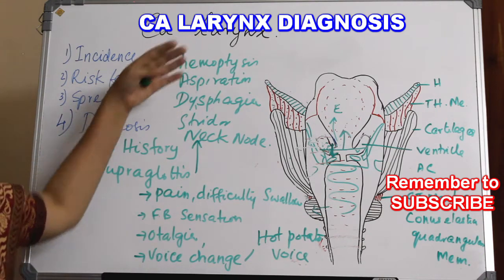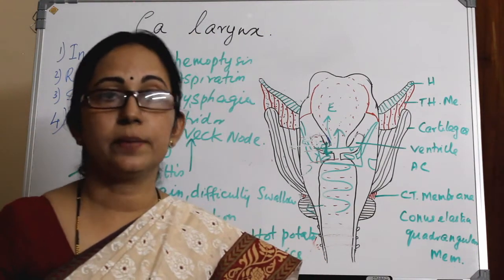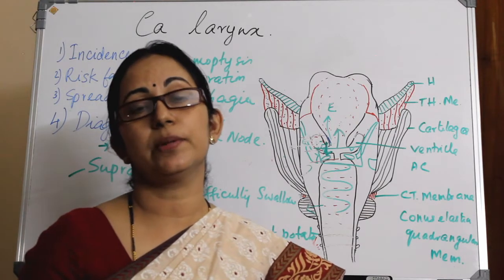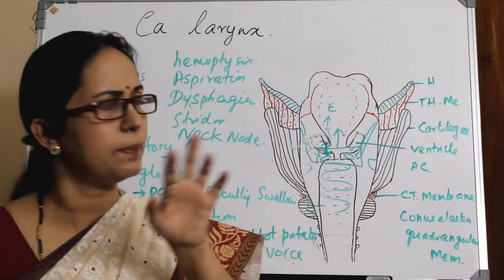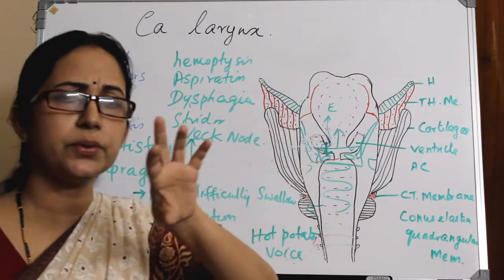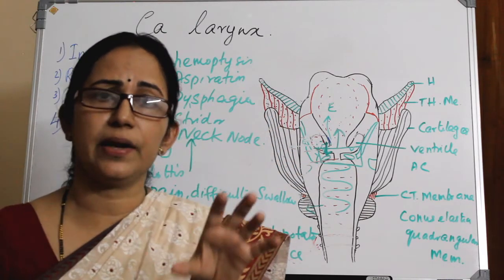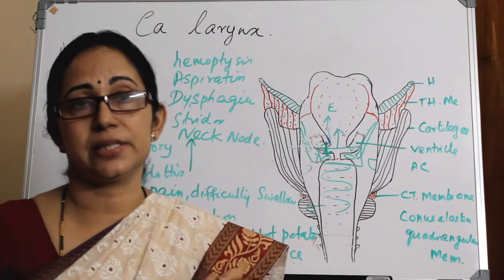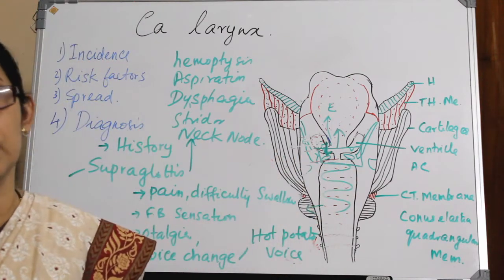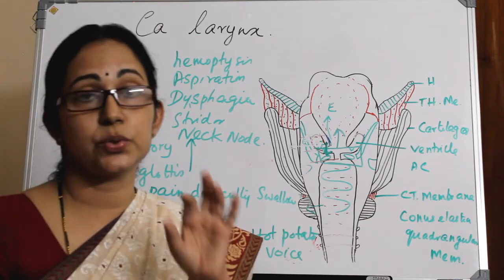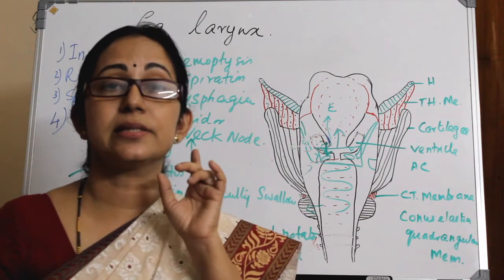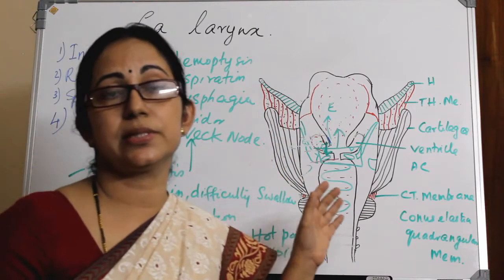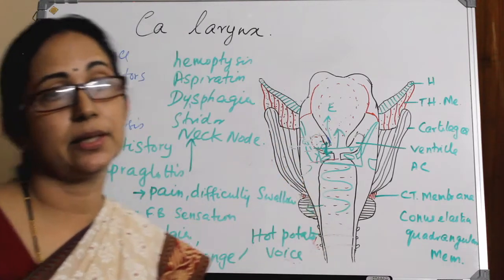Regarding glottic malignancy: CA glottis will produce very early symptoms, because even a minute change in the wave pattern of the vocal cords due to a minimal lesion will cause a change in voice — hoarseness of voice. That is the earliest symptom, and it is the easiest to detect. Of the three regions, the best prognosis is with CA glottis.